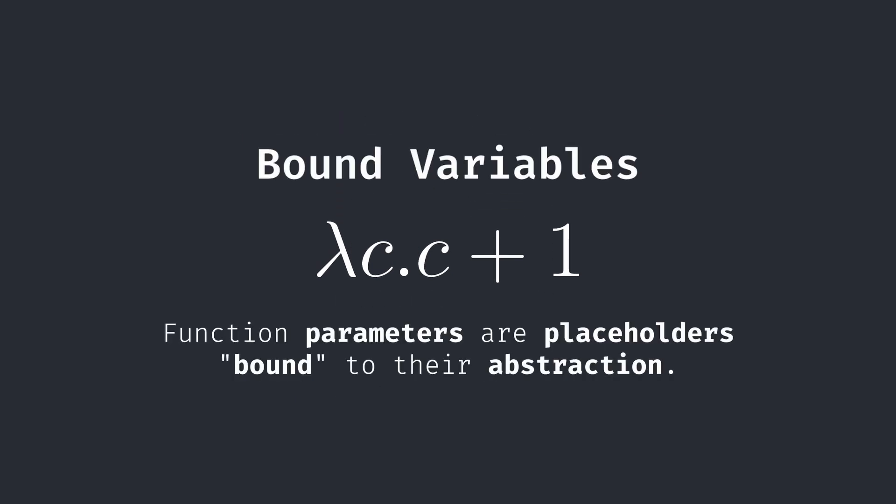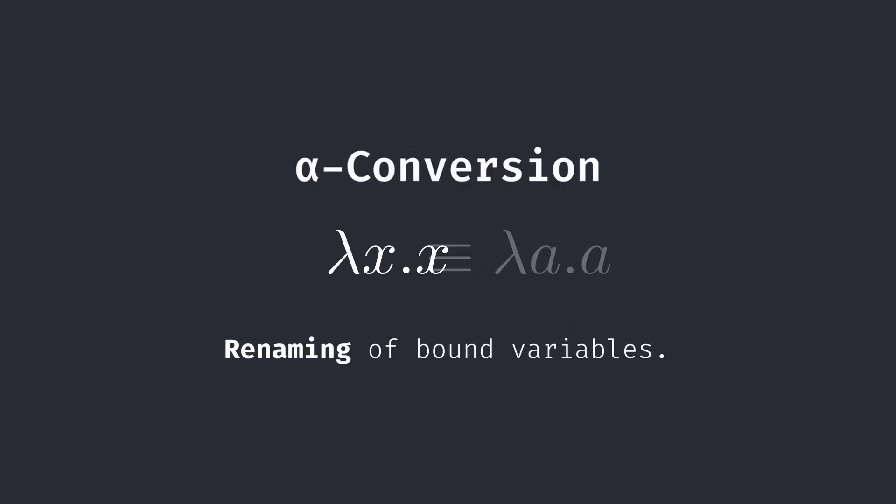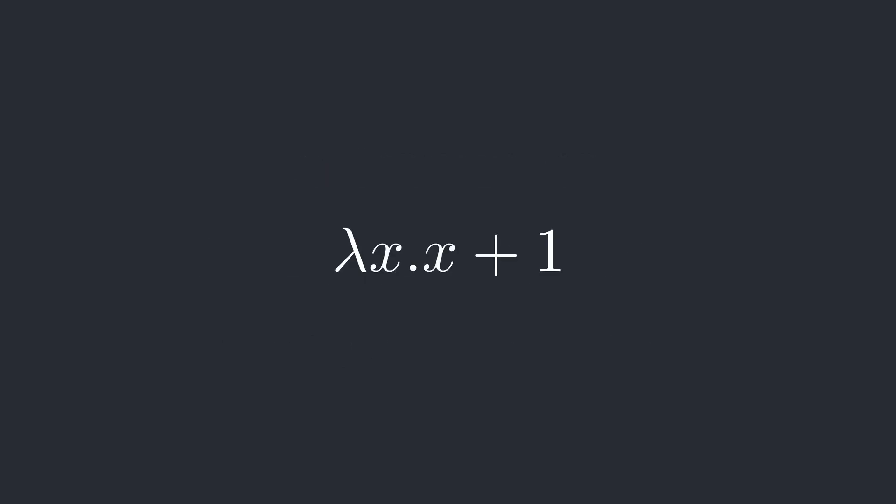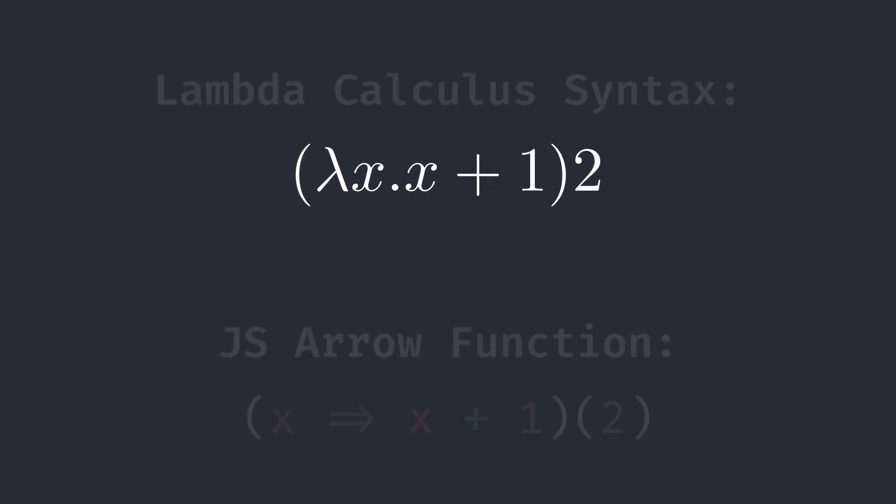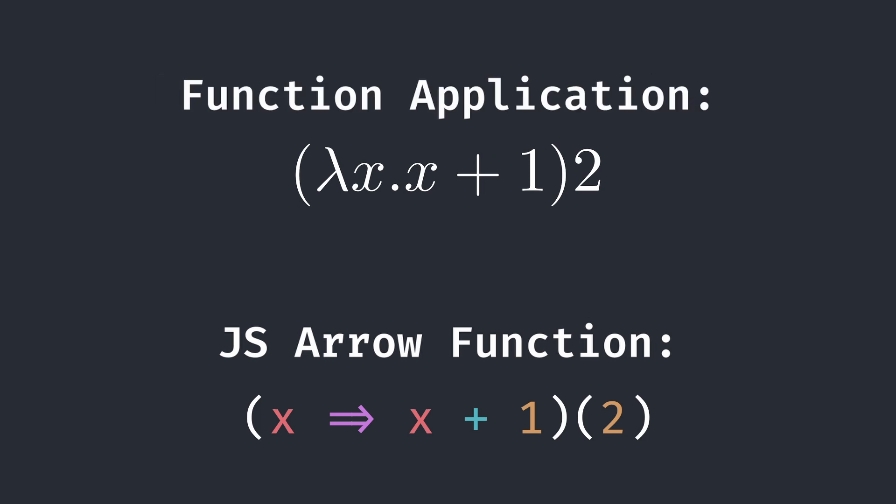These placeholder variables are known as bound to their abstraction and can be swapped out with any other variable name in a process known as alpha conversion, denoted with the identically equal sign. To call this function, we simply follow it by our input. This is formally known as an application.